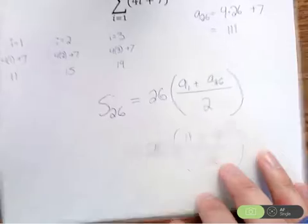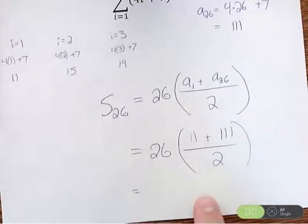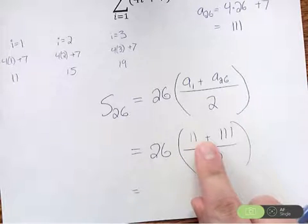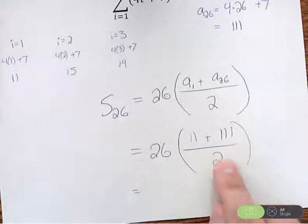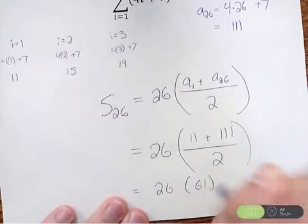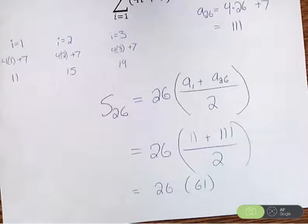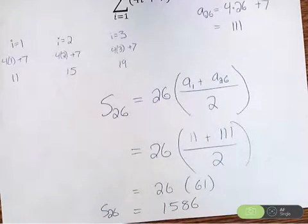So now that I have all my numbers, it's really just a simple game of using a calculator. So I'll do 11 plus 111. So that's 122 divided by 2 is 61. So I have 26 times 61, which using a calculator, you're going to get 1586. So the sum of the first 26 terms here is going to be 1586.